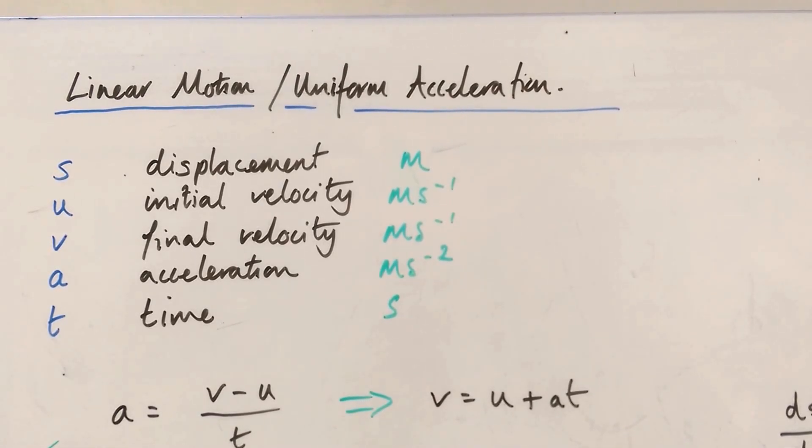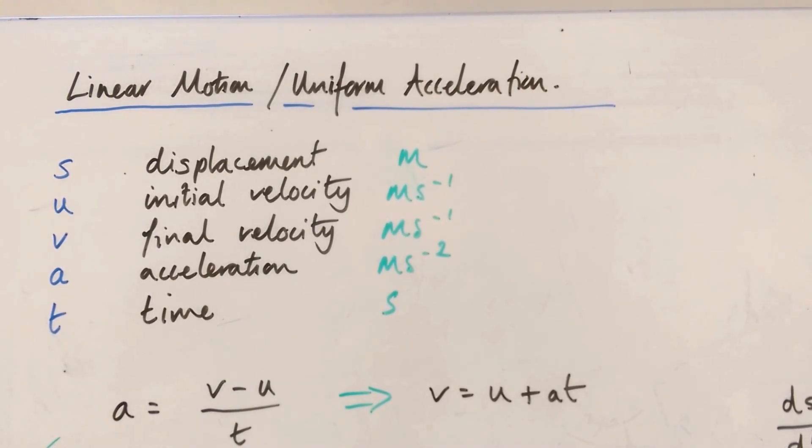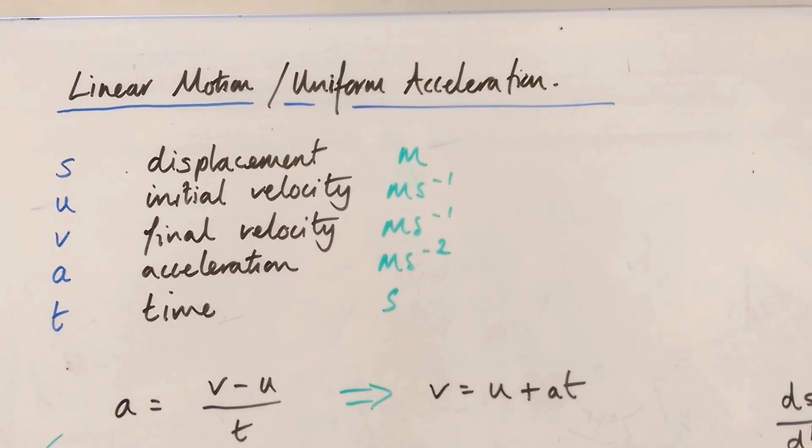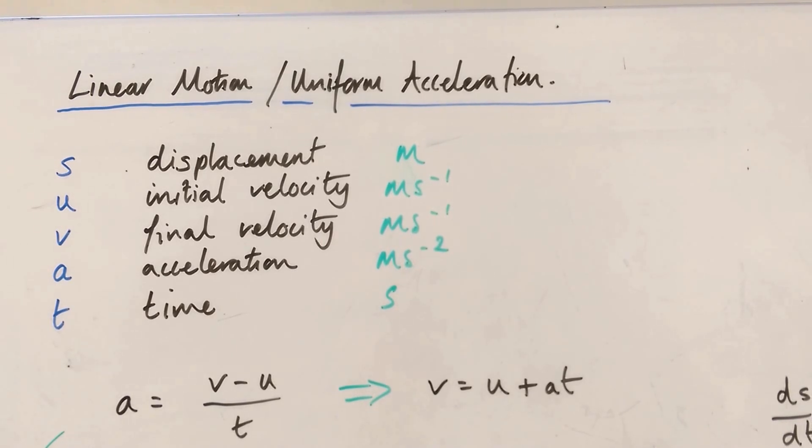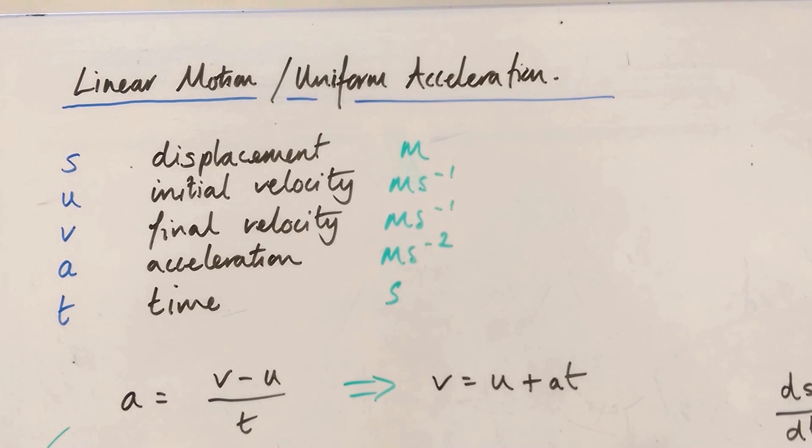S is the symbol for displacement, which is measured in meters. U is initial velocity, measured in meters per second or meters seconds to the minus one. V, final velocity, meters seconds to the minus one. Acceleration is a, meters seconds to the minus two or meters per second squared. And little t is time in seconds.